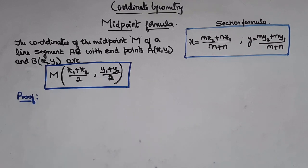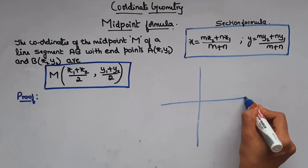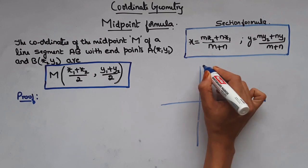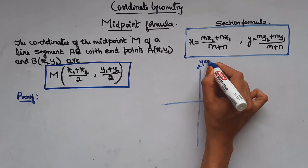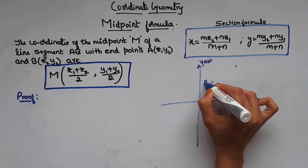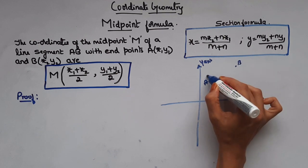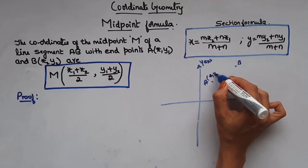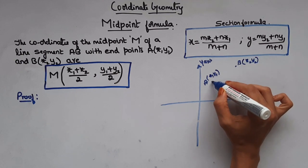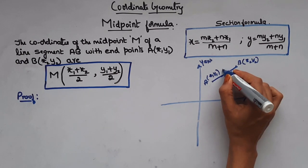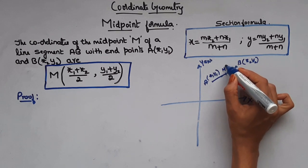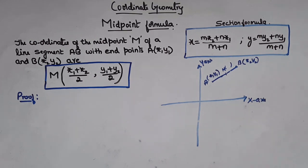Now let's see the proof. So let's consider this is your x-axis, and this is your y-axis. We have a line segment AB, where A is (x₁, y₁) and B is (x₂, y₂). The midpoint of this we'll take it as M. So now we have to find the coordinates of this midpoint.